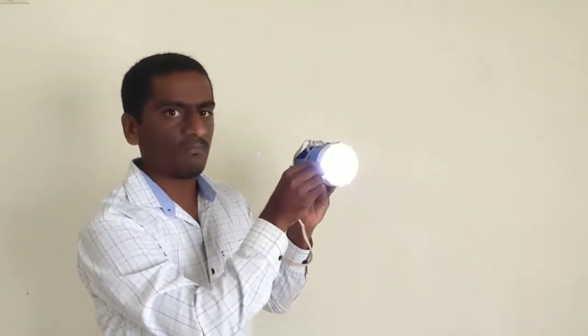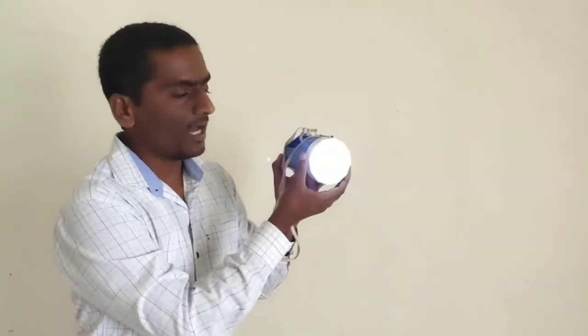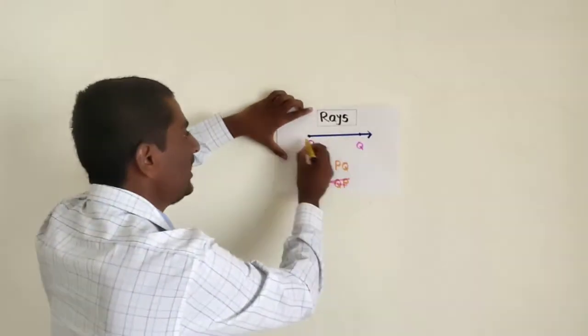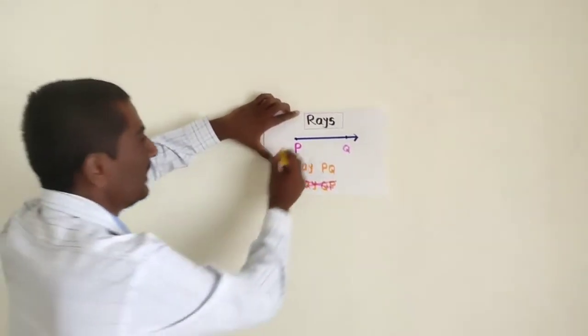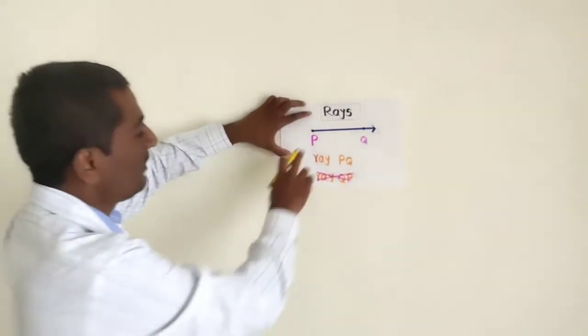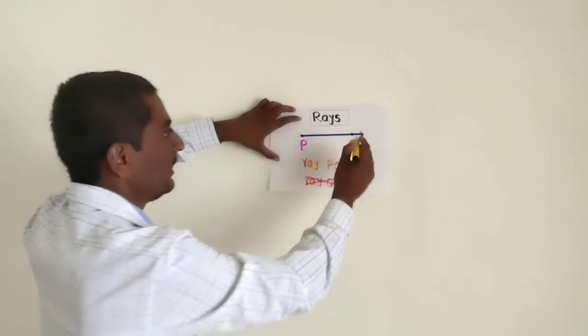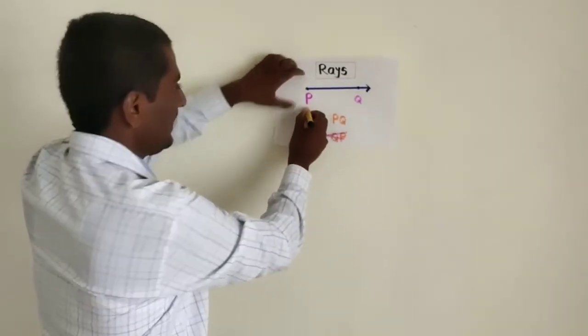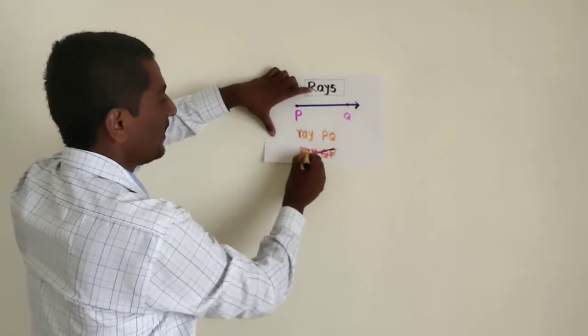Line segment is written as seg PQ. Now see this torch. In this torch, this is origin of rays, and these rays go forward in one direction. A ray is also part of line. It starts from one point and runs forward in one direction. See here, P is origin.